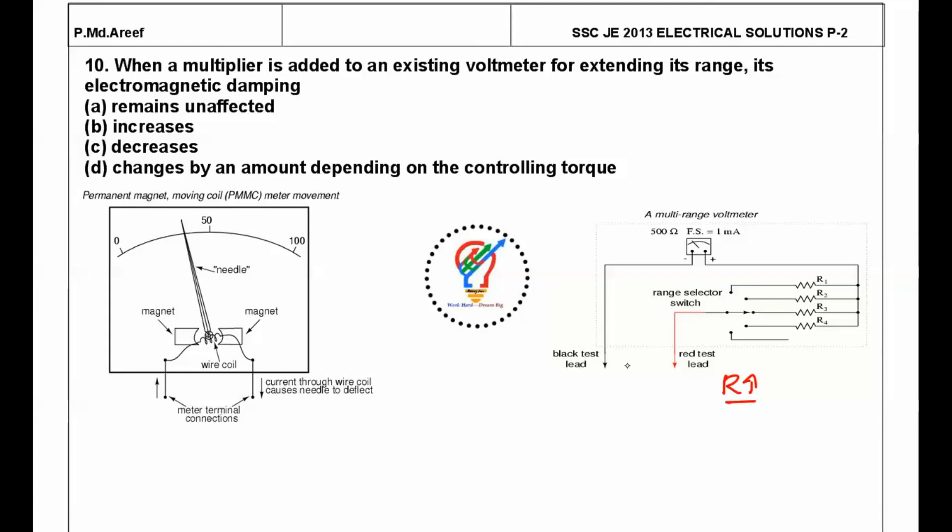As resistance increases, what will happen to the damping? As resistance increases, the eddy current damping decreases because of flux linkages between the windings. Flux linkage is N times phi. The flux is proportional to current I. As you increase the resistance, current automatically decreases, so the eddy current damping also decreases. The answer is C.